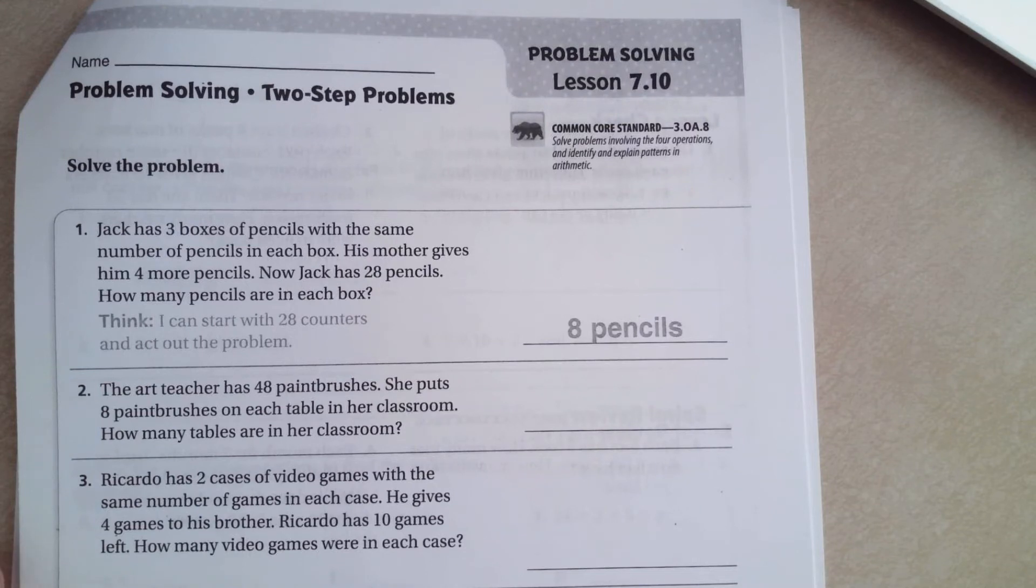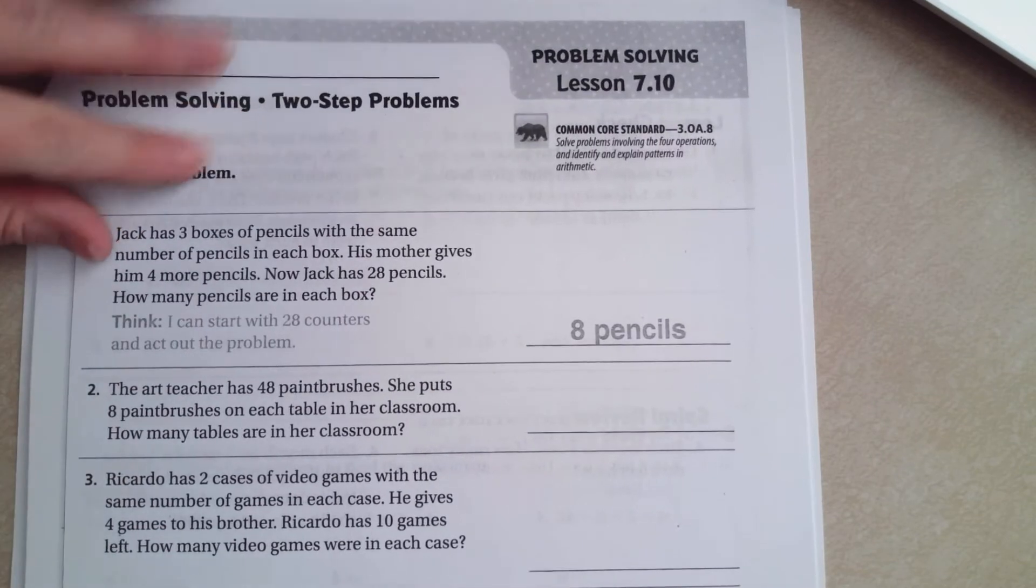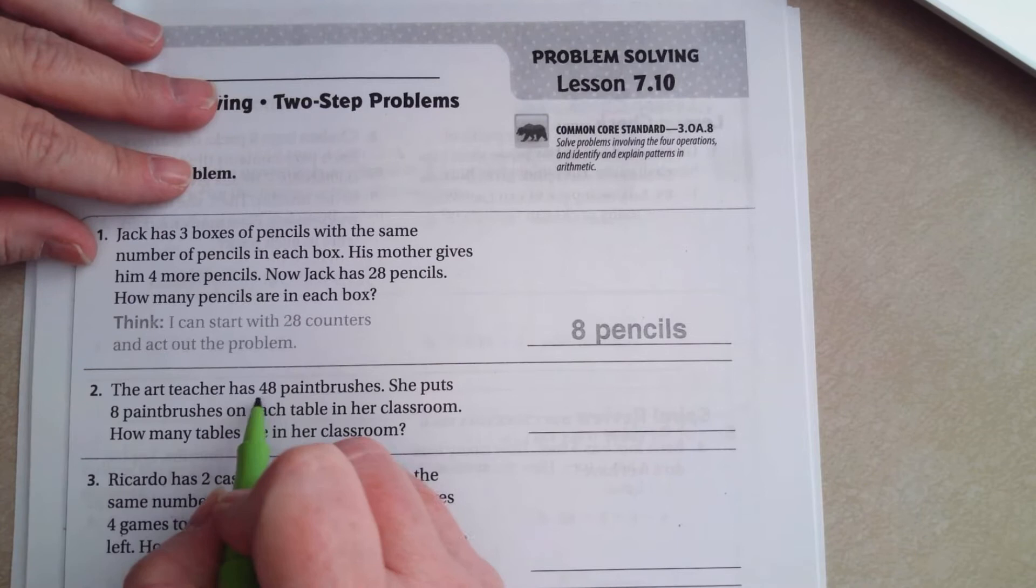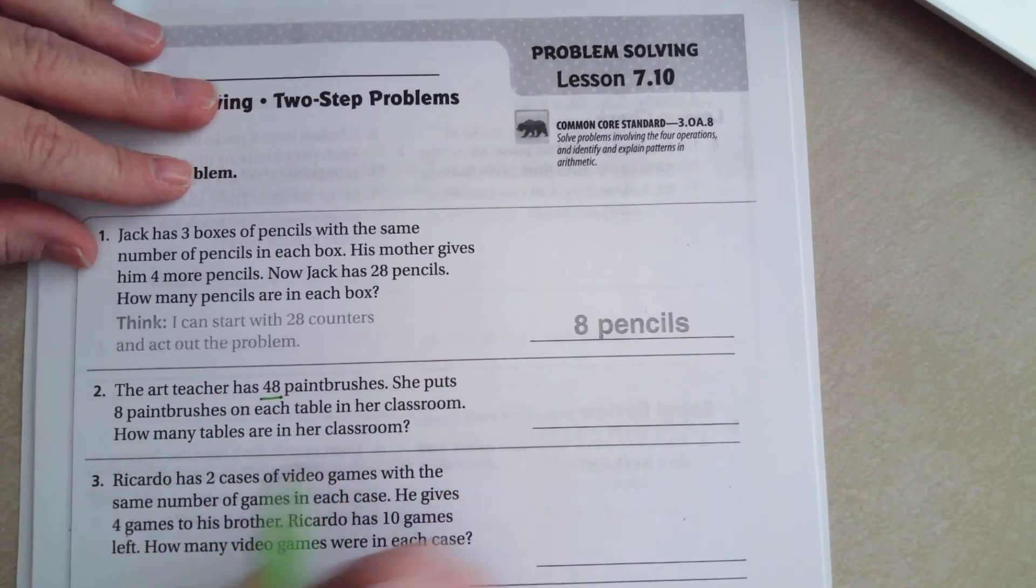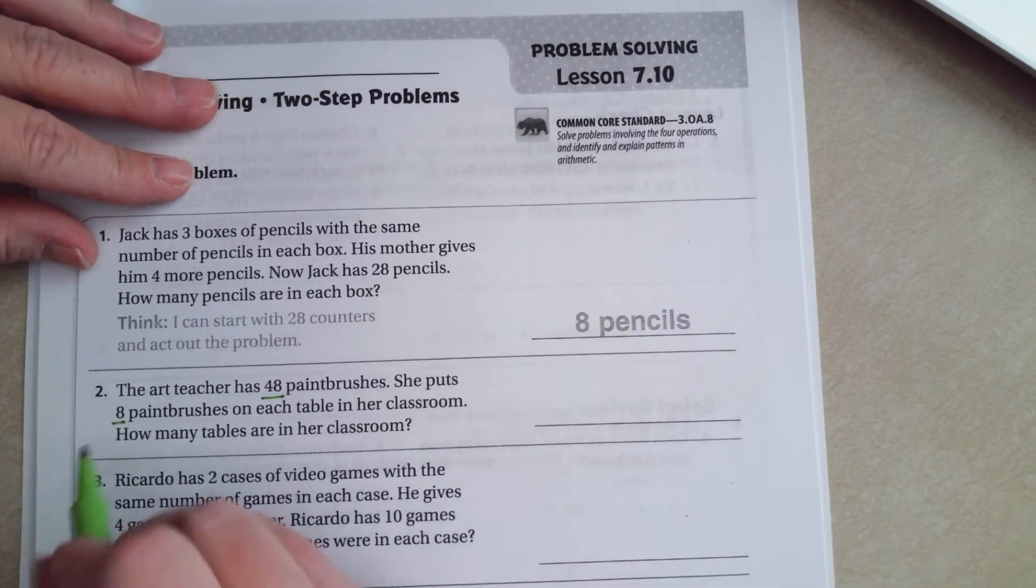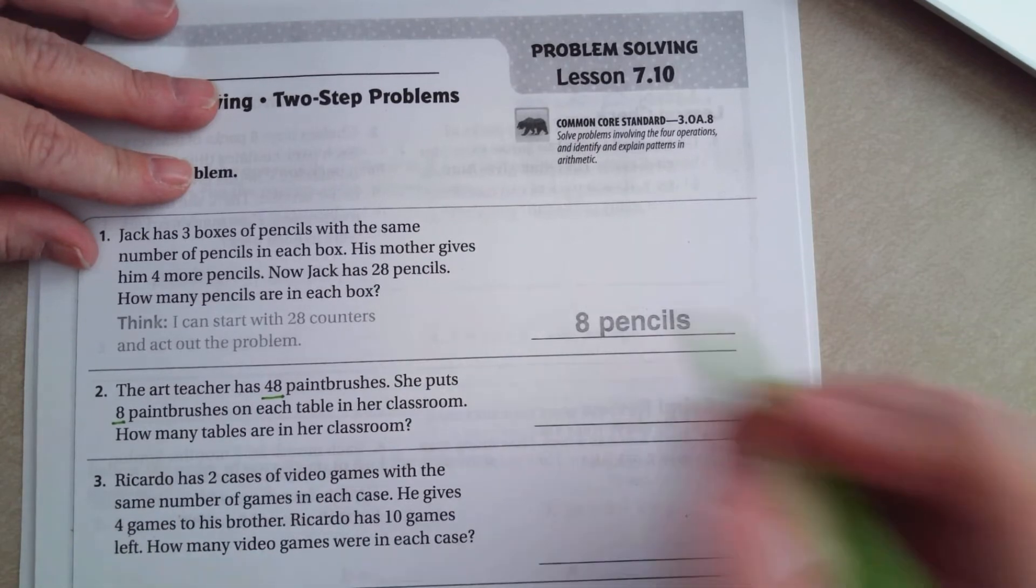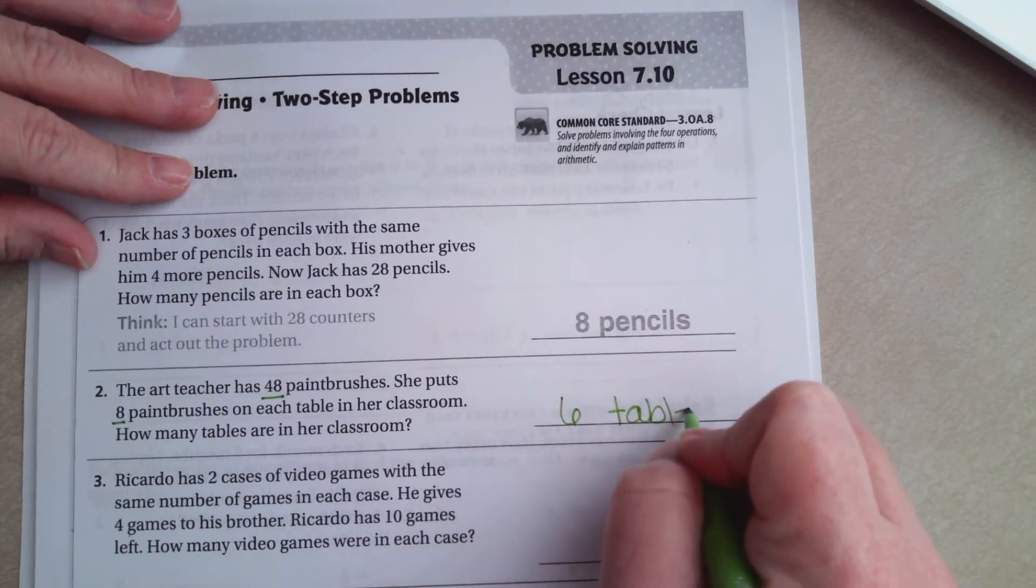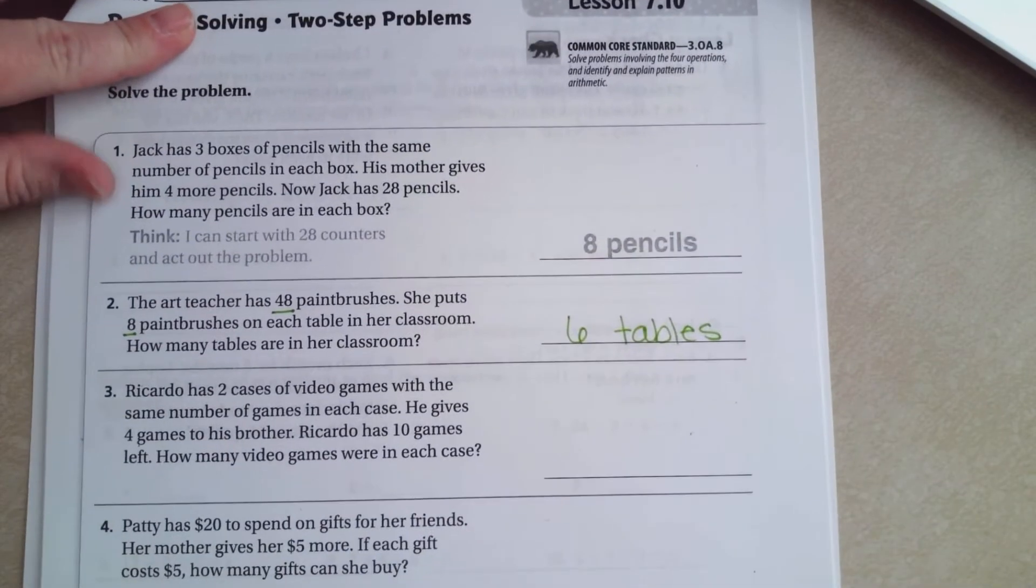Hey guys, welcome to third grade Chapter 7, Lesson 10. We're going to get started with number 2. The art teacher has 48 paintbrushes. She puts 8 paintbrushes on each table in her classroom. How many tables are in her classroom? Well, 8 times what is 48? 8 times 6, so six tables.